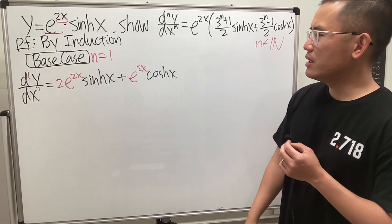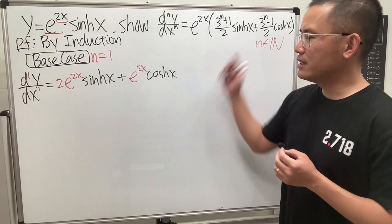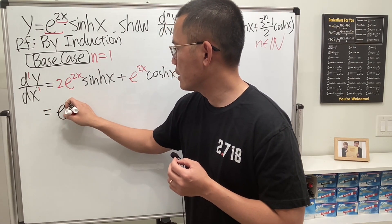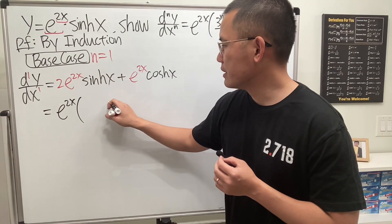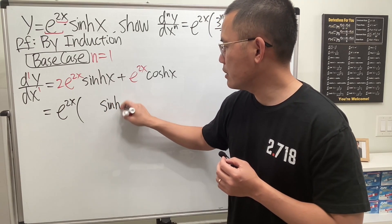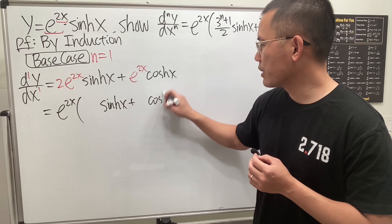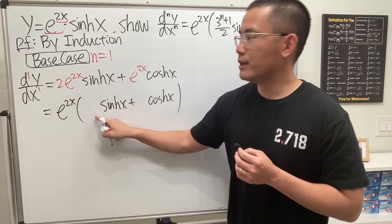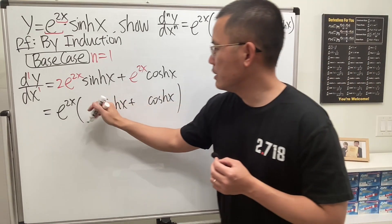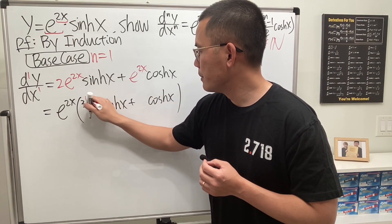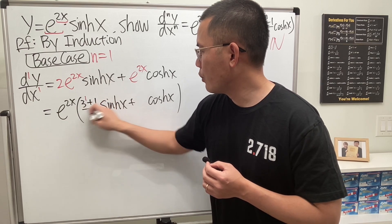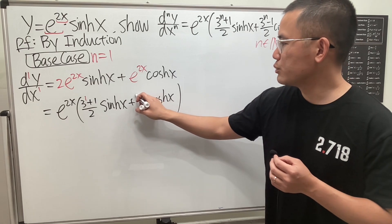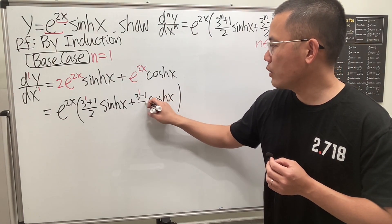To make it match the target formula, I factor out e to the 2x. We then have the sinh part and the cosh part. The coefficient on sinh is supposed to be 2, which is precisely 3 to the first plus 1 over 2, and the coefficient on cosh is 1, which is 3 to the first minus 1 over 2.